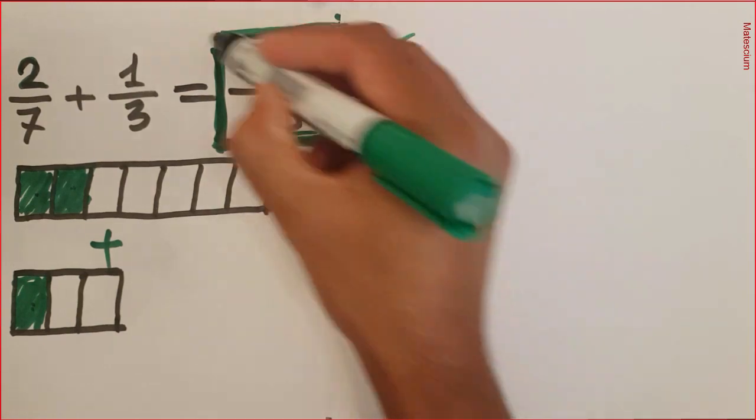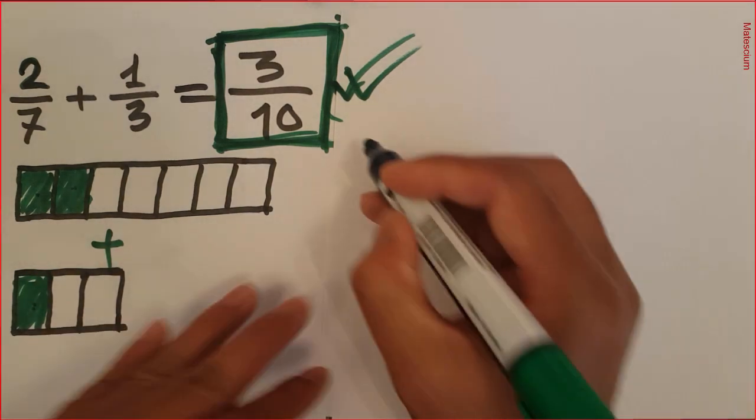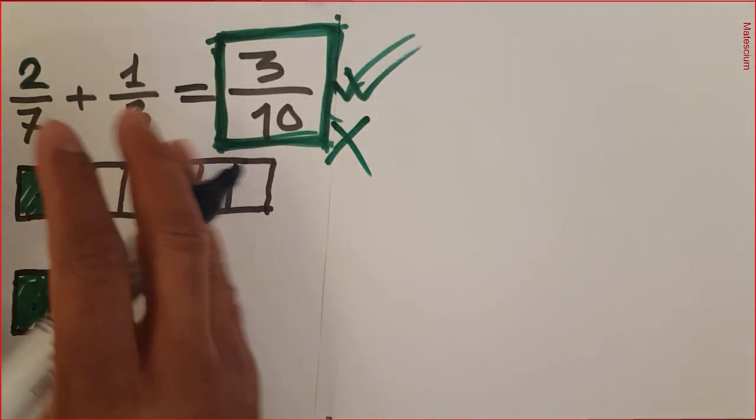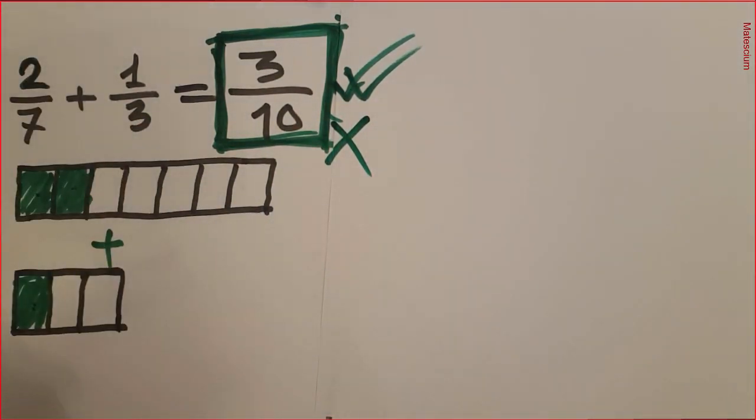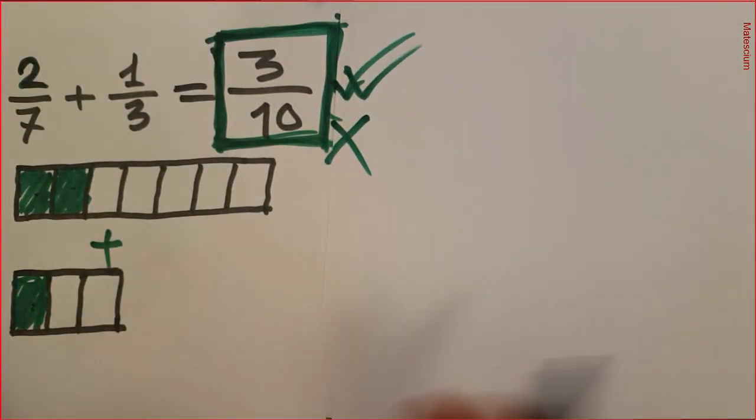What do you think about this answer according to this graphical explanation? Do you think this answer is correct? Well, this is not the correct answer according to the conventional mathematics. Because this graphical explanation seems pretty interesting, but reality is this is not the correct answer.